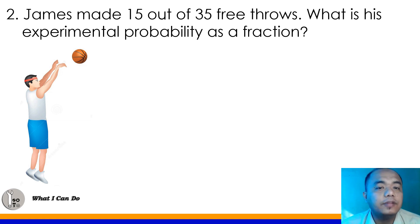Number 2. James made 15 out of 35 free throws. What is his experimental probability as a fraction? So, this is very easy class. How many total did James shoot in his free throws? Yes, 15 total. How about how many total free throws did he make? Yes. So, that's 35. So, 15 over 35. But then, we will reduce that to lowest term by dividing it by 5, their GCF actually. So, 15 divided by 5 will give you 3. And 35 divided by 5 will give you 7. So, 3 over 7 is our answer since fraction form is what's being asked in number 2.